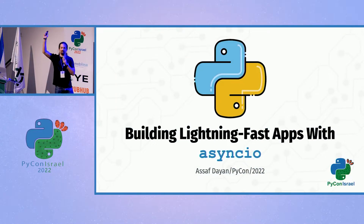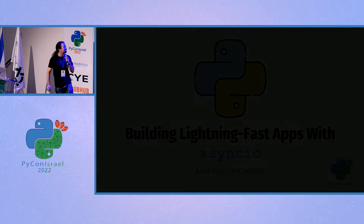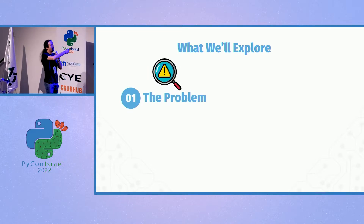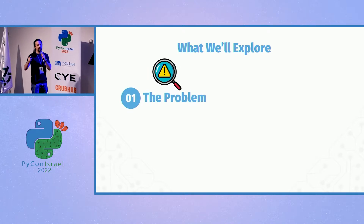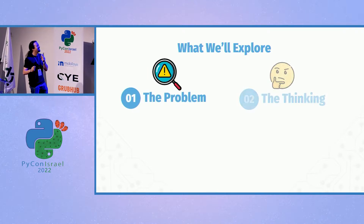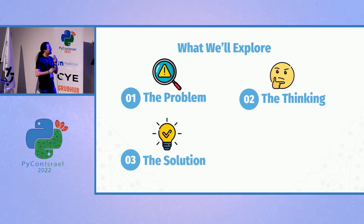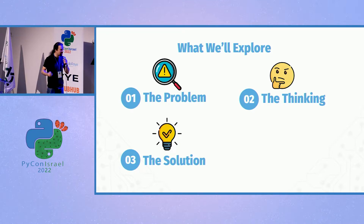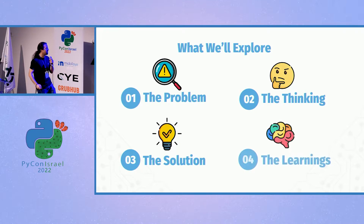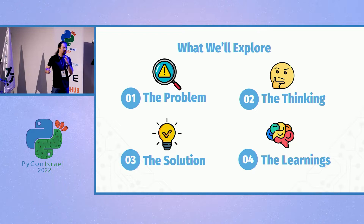Thank you, and hi. Welcome. I'm Asaf, and this is Building Lightning Fast Apps with Async.io. Today, I want to tell you a story — a story of how we had a problem in production at the worst possible time, how we had to solve that problem by designing a new app (spoiler: it's going to include Async.io), how that solution found itself in production, how it integrated with the existing architecture, and lastly, some learnings we had from that adventure.